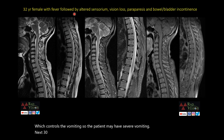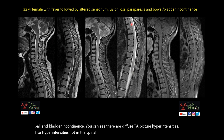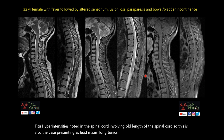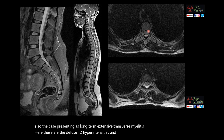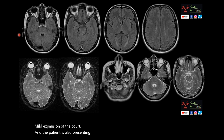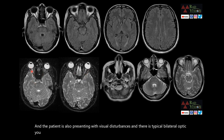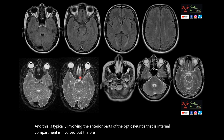Next case: a 32-year-old female with fever followed by altered sensorium, vision loss, paraparesis, and bowel and bladder incontinence. There are diffuse T2 and STIR hyperintensities in the spinal cord involving the whole length with mild cord expansion — presenting as longitudinally extensive transverse myelitis. Bilateral optic neuritis is present, typically involving the anterior parts of the optic nerve — the intracanalicular compartment — while the pre-chiasmatic and chiasmatic region is spared.